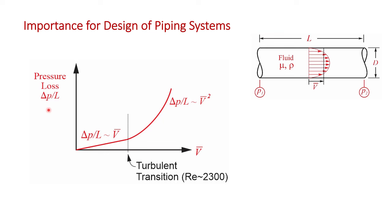One of the other parameters of interest in lab two is the pressure loss along the pipe. You'll be measuring the pressure loss over a length of pipe as a function of velocity. In the laminar regime, the pressure loss per unit length varies linearly with velocity, whereas in the turbulent regime, especially at high Reynolds number, the pressure loss per unit length varies approximately as the average velocity squared. As you can imagine, this has significant implications for the design of piping systems.